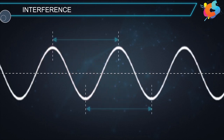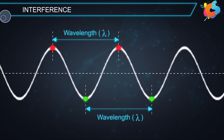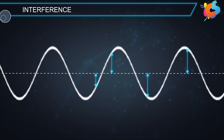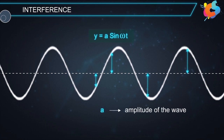Also, the distance between two successive crests or two successive troughs is known as the wavelength of the wave, lambda. The displacement or height of the wave at any instance is given by y = a sin(ωt), where a is the amplitude of the wave and ω is the angular frequency at time t.